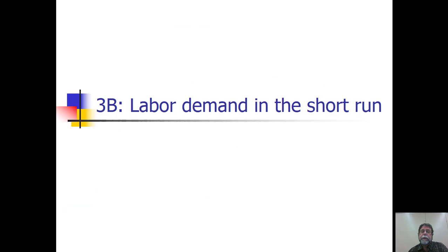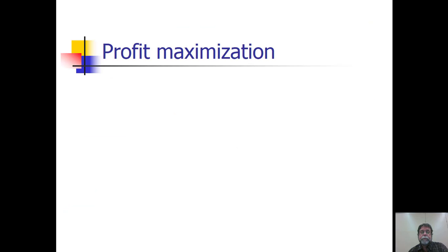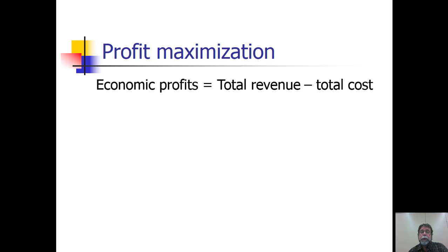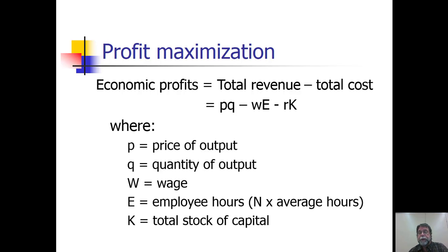In this video, we're going to talk about labor demand in the short run. We start by assuming that firms attempt to maximize their profits. Economic profits are equal to total revenue minus total cost. In a simple model, total revenue equals P times Q, and total costs are the sum of labor costs and capital costs. Labor cost is the wage rate times the number of employee hours, and capital cost is R times the quantity of capital. So total revenue minus labor costs minus capital costs equals economic profit.